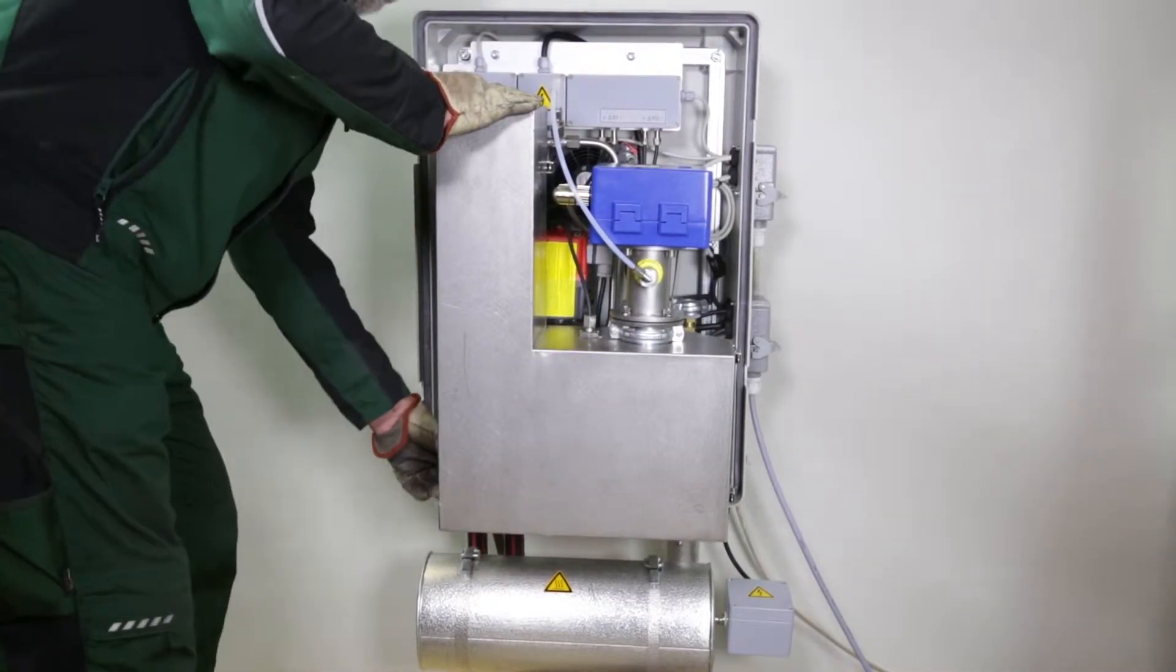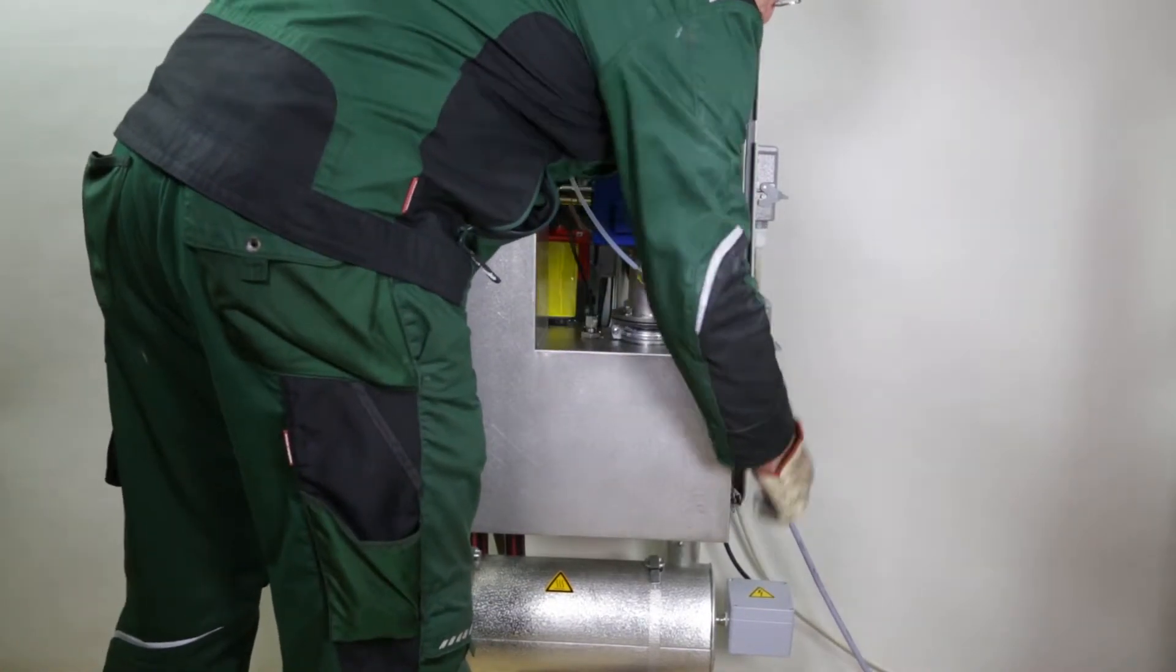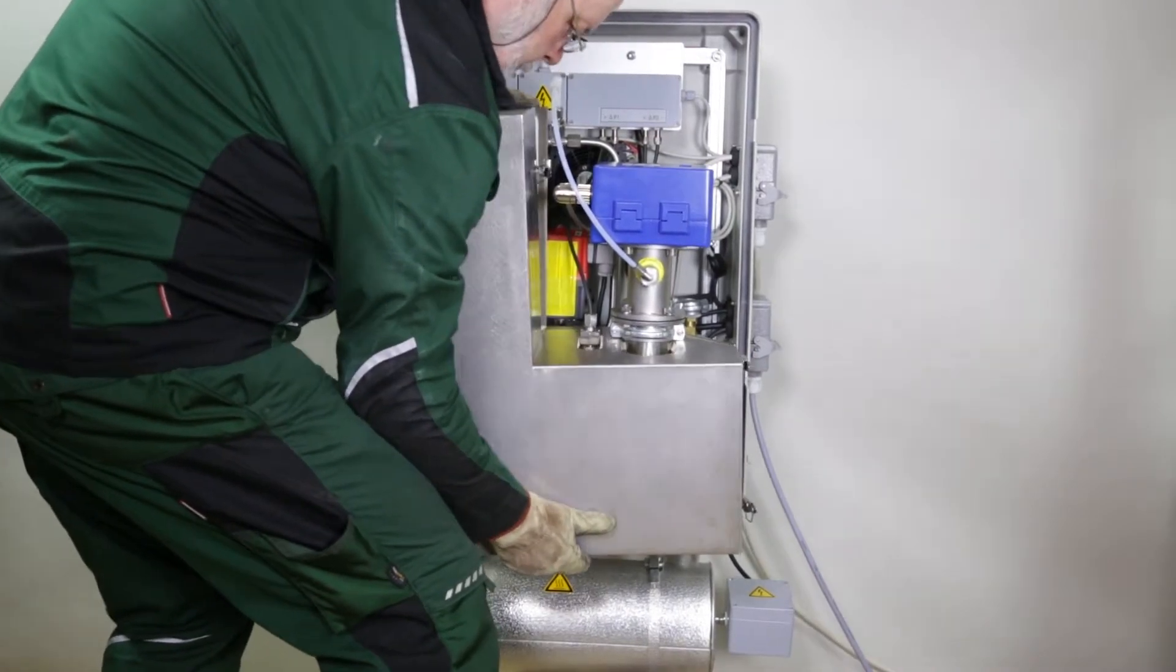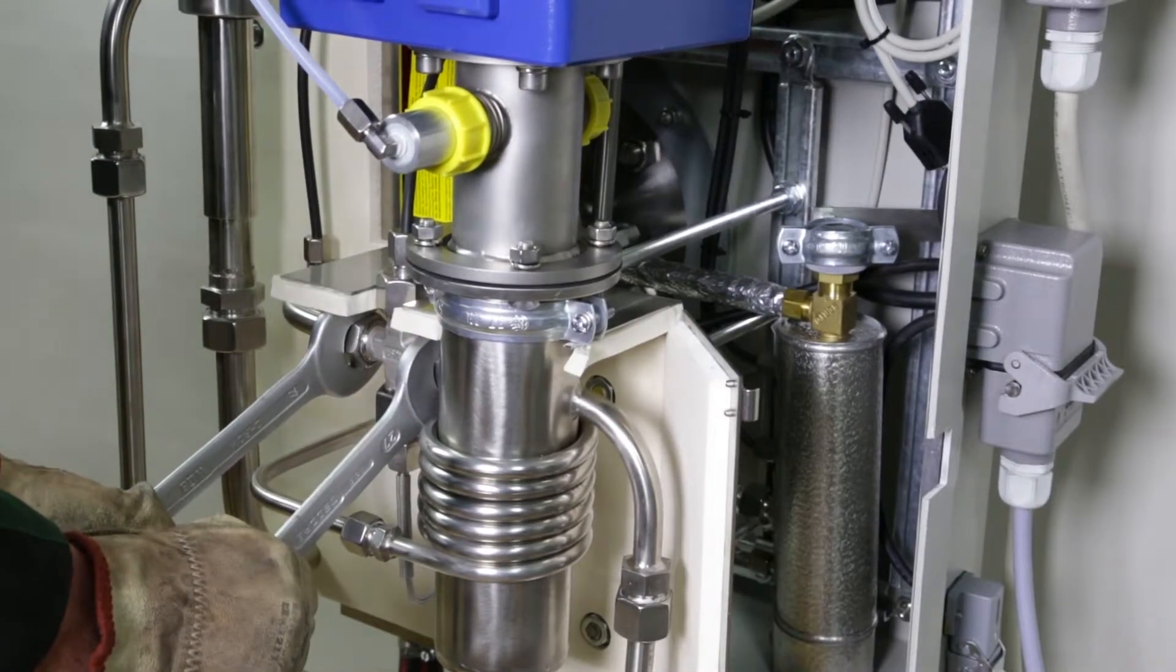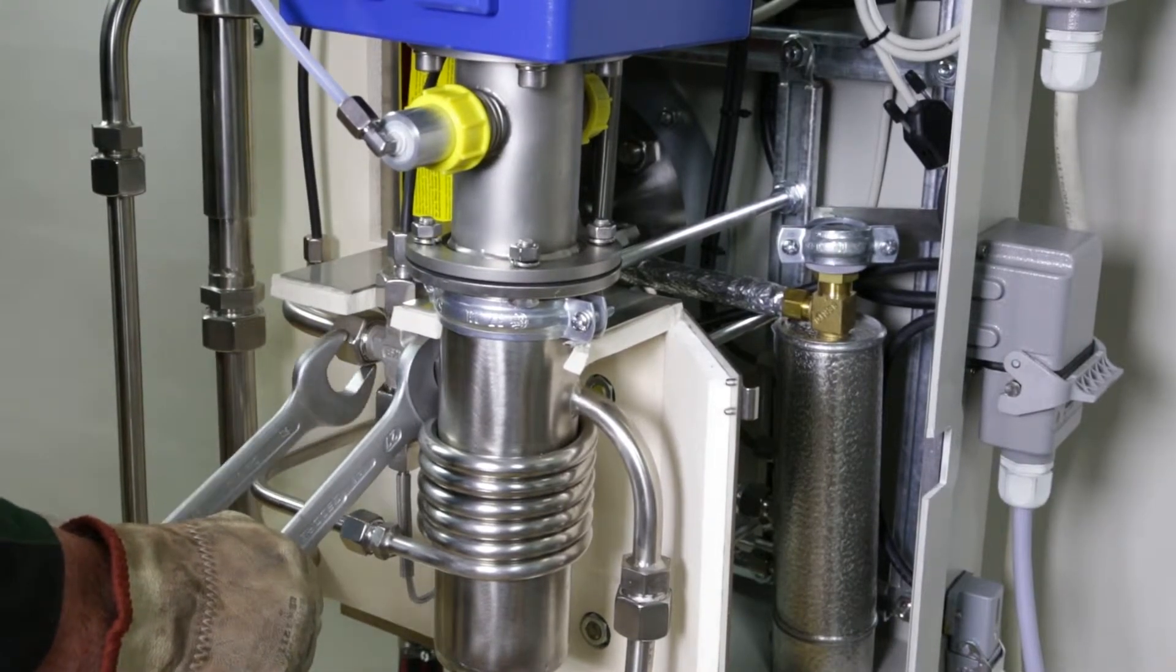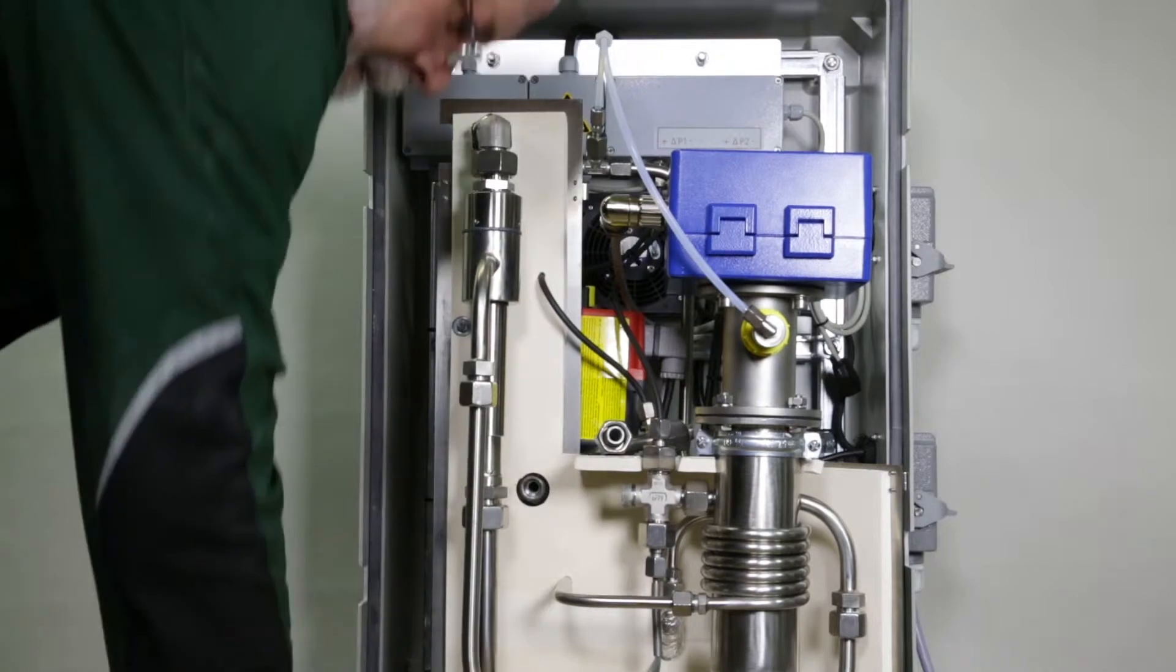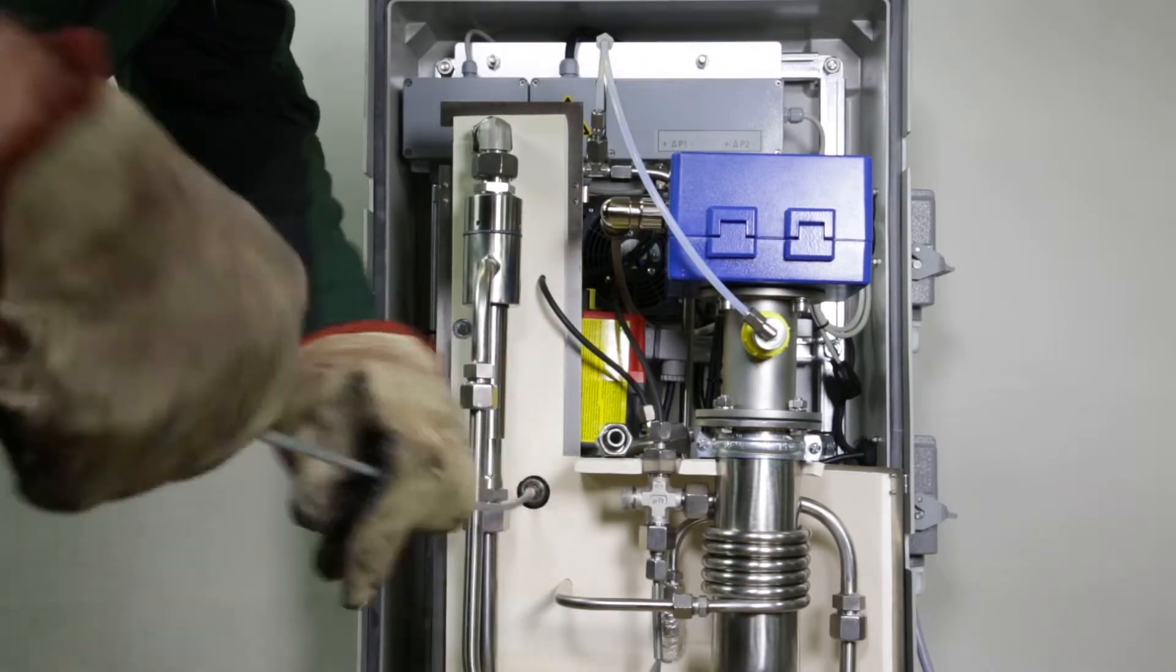Release and remove the insulation in order to clean the sampling tube. Remove the bow between ball valve and measuring chamber. Clean the sampling tube with the cleaning brushes.